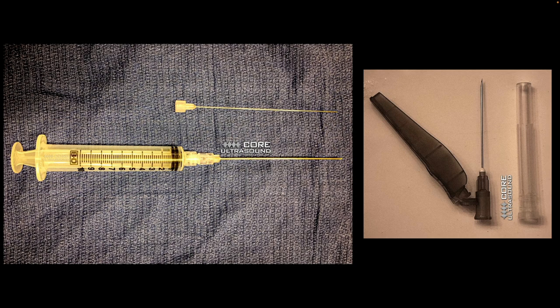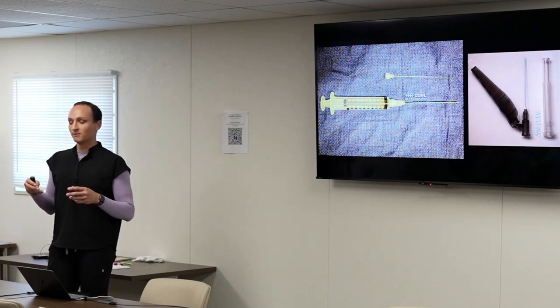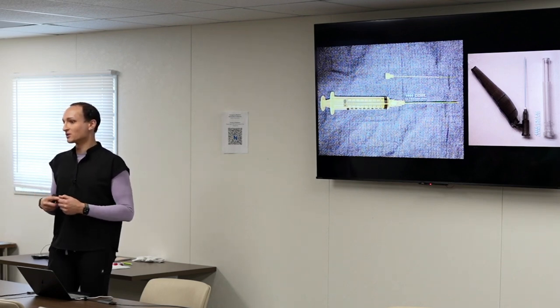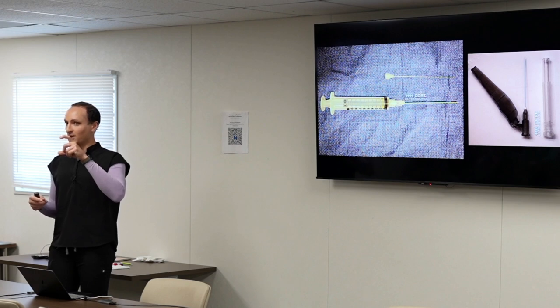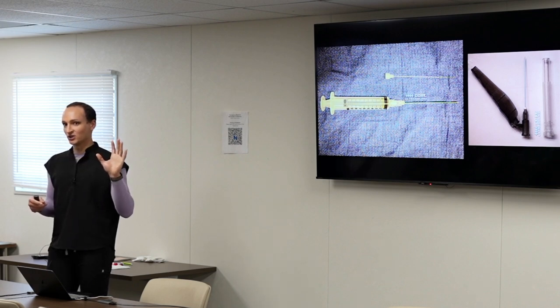For needle selection: you can use standard injection needles, but with ultrasound it's always better to use a bigger needle. It'll be very difficult to aspirate pus through a 27 gauge — it would take forever. I usually go with 20 gauge. If it's going to be a large volume I might go up to 18 gauge. You can also use a spinal needle — for the knee and hip I'm almost always using a 3.5-inch spinal needle. For more superficial joints a 1.5-inch 20 gauge injection needle works fine.